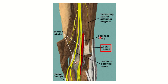Here we can see the biceps femoris and the two groups of nerves — the tibial nerve and the common peroneal nerve. Both arise from the sciatic nerve at the level of the upper part of the popliteal fossa.